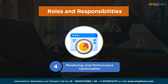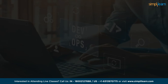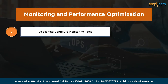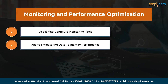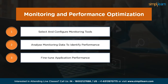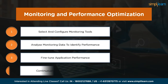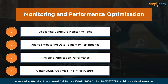Fourth on the list is monitoring and performance optimization. DevOps engineers monitor system performance, identify bottlenecks and optimize the infrastructure and application stacks as necessary. They implement monitoring tools like Prometheus or Grafana to collect and visualize metrics, logs and traces, allowing teams to identify bottlenecks and enhance the overall efficiency of the CI/CD pipeline. They also collaborate with development and operations teams to fine-tune application performance and continuously optimize infrastructure, ensuring high availability, scalability and reliability.